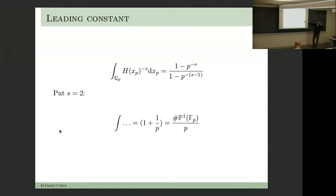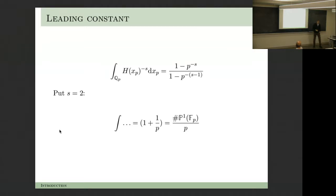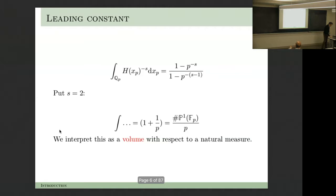Let me put s equals 2, and I'll explain what the 2 means. You see 1 minus 1/p² divided by 1 minus 1/p, so it's 1 plus 1/p, which is (p+1)/p. You can interpret this as the number of points on P¹ over a finite field, divided by p to the 1, which is the dimension of P¹. The moral is: we are integrating over the p-adic part of A¹ in P¹, but finding information concerning the closure.